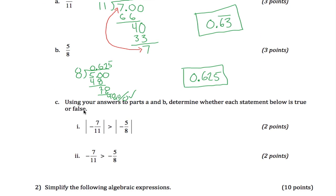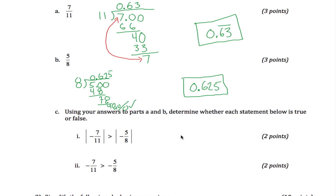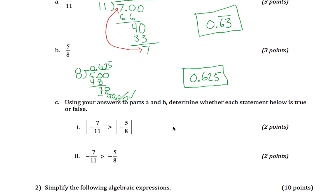Alright, part C here, it says use your answers to part A and B to determine whether each of these statements is true or not. We figured out that 7 elevenths was 0.63 repeating. What we have here is the absolute value of negative 0.63 repeating, and I want to know, is that greater than the absolute value of negative 0.625?